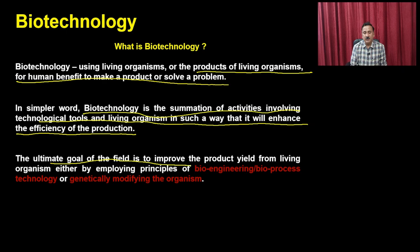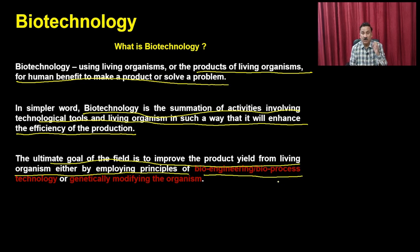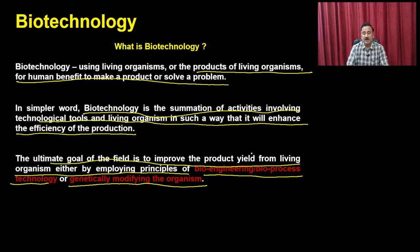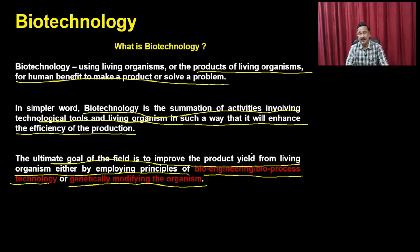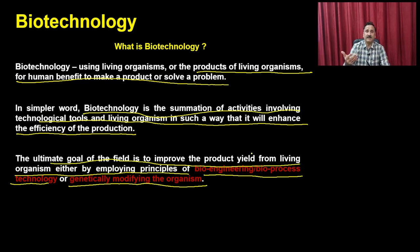The ultimate goal of the field is to improve product yield from living organisms either by employing the principles of bioengineering or bioprocess technology, or by genetically modifying the organism. You have three options: utilizing bioengineering or bioprocess approaches to reduce losses and increase yield, or producing genetically modified organisms for better yield.